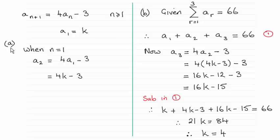So in part a you had to find out what a2 was in terms of k. And in part b you had to find out what the value of k was for this summation here to equal 66. And k turned out to be 4. So I'll just take you through this in case there were any problems.